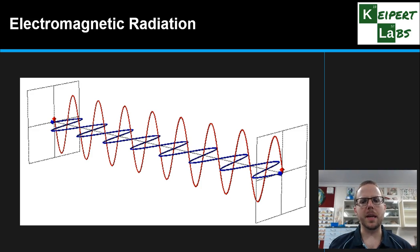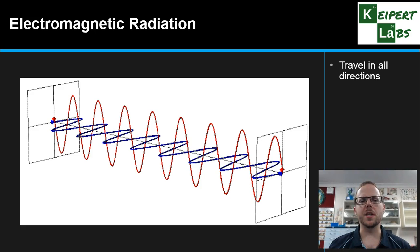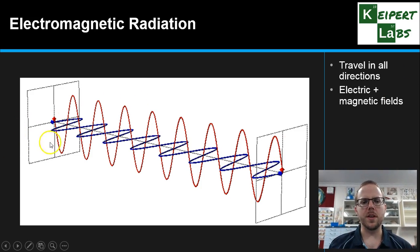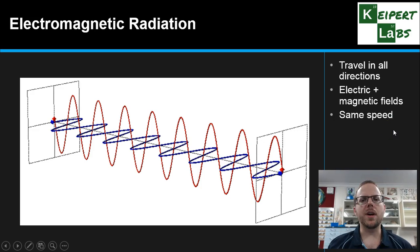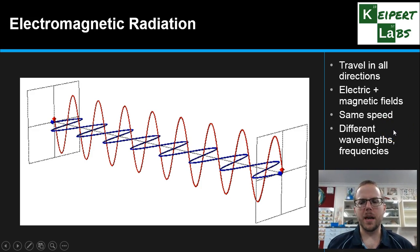Looking at electromagnetic radiation — some of the things we know is that it travels in all directions from a star or any object that emits electromagnetic radiation. It consists of electric and magnetic fields in combination. You can see on the image here the red and the blue representing those two different fields at right angles to each other. They all travel at the same speed — what we call the speed of light — but we still have different wavelengths and frequencies for the different types of radiation.